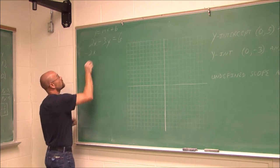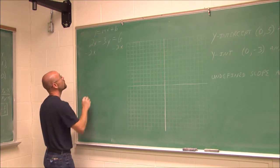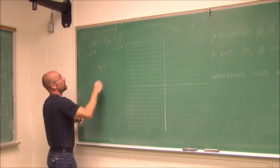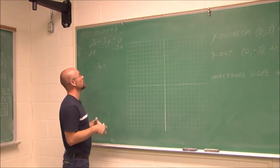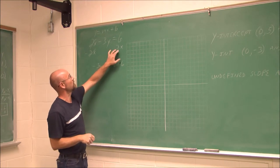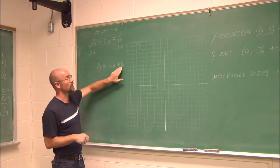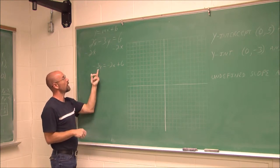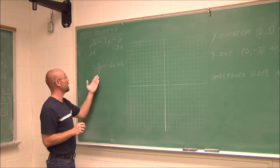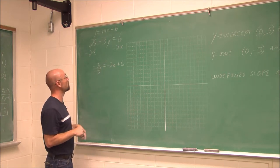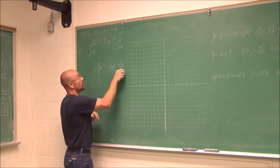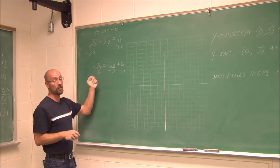I subtract 2x from both sides. What I do to one side, I do to the other. The 2x terms cancel on the left, giving us negative 3y equals negative 2x plus 6. The terms are not like terms, so I put the x term first and the constant second. Because it was subtracted, it becomes negative 2x, and the constant remains positive 6.